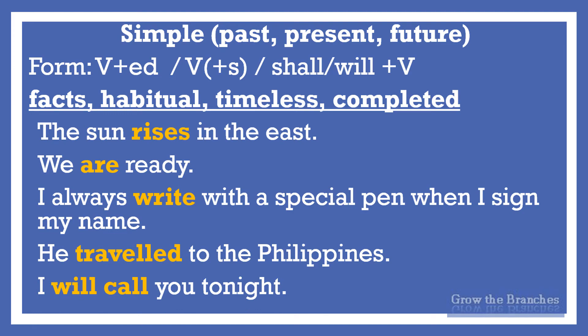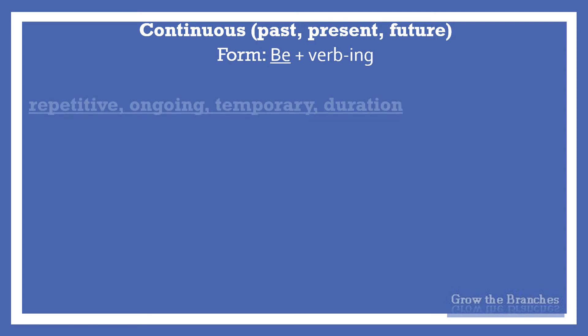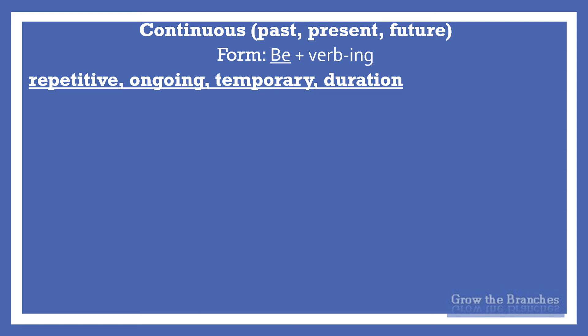The continuous, also called the progressive aspect, expresses duration. The form is: be (in the past, present, or future) plus the verb in the -ing form. Progressive tenses indicate that actions or events are repetitive, ongoing — meaning progressing — or temporary. The continuous aspect focuses on the duration of an event. It expresses that the action was, is, or will be in progress at a specific point in time or over a period of time. 'Are you enjoying yourself?' — the verb 'enjoying' doesn't ask about life in general but asks about now, at the moment of speaking. We use the continuous aspect when speaking about an action taking place at a particular point in time.